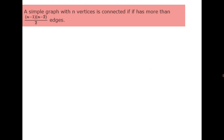The next question: a simple graph with n vertices is connected if it has more than (n−1)(n−2)/2 edges. There are many approaches to solve this one — one is induction, but I am going to discuss another approach. The key observation is that this number actually represents the number of edges in K(n−1). We have to prove that a simple graph is connected if it has more than this number of edges.